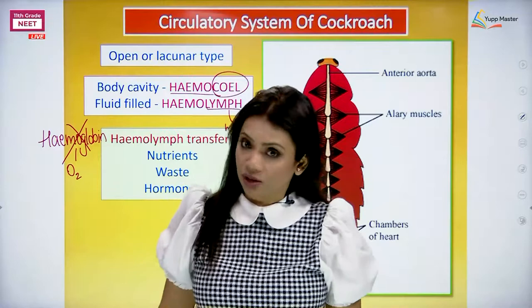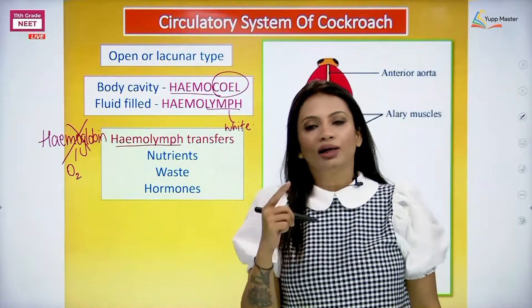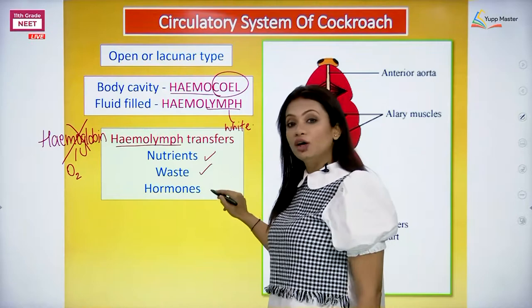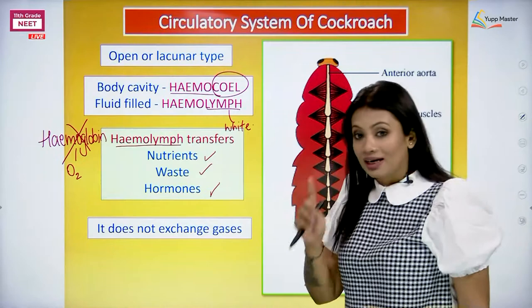If it's not doing any work in exchange of gases, what exactly is it doing? The hemolymph of the cockroach does the work of transporting nutrients, wastes, and hormones. Blood has no role in exchange of gases - please remember this, it is a very important point.